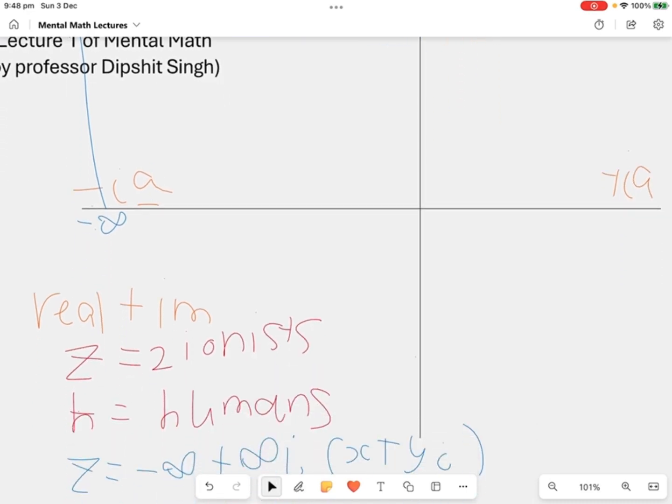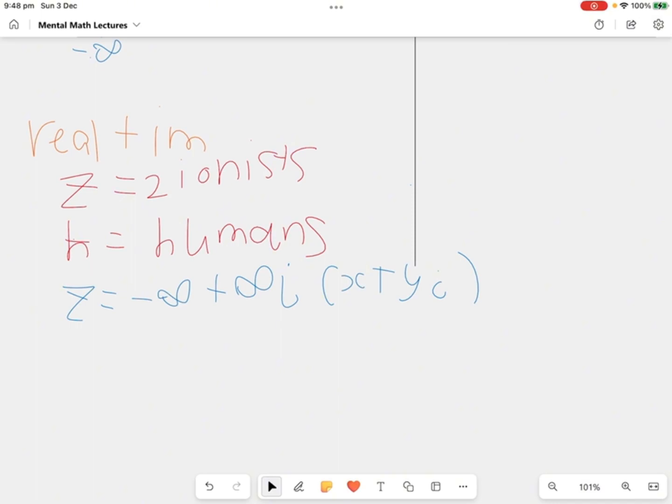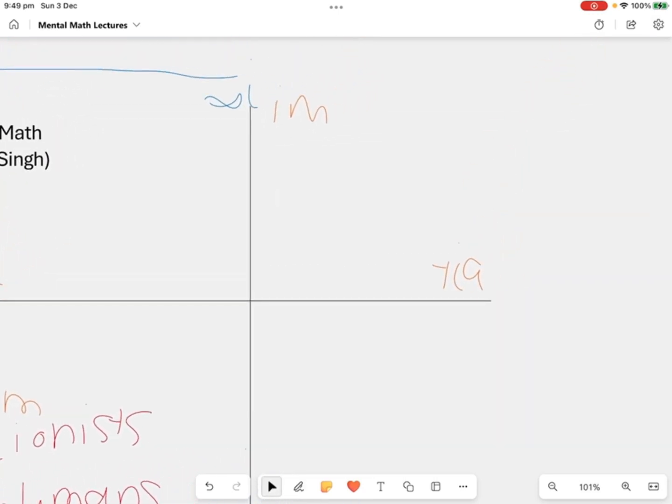Now let's graph the other people, the real ones, the ones who are not Zionists. So everybody else, H, your equation is +∞ + 0i. What that means is you have maximum IQ and your humanity exists, therefore you don't belong on the imaginary axis. You are just going to be there, that's +∞.